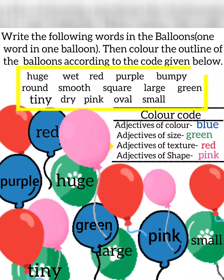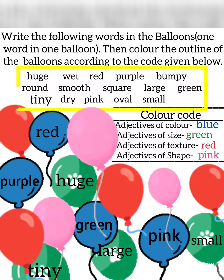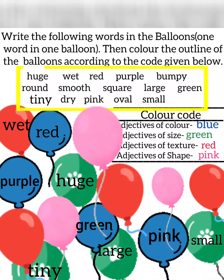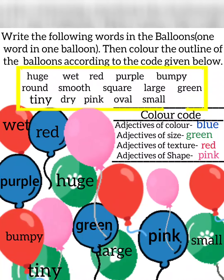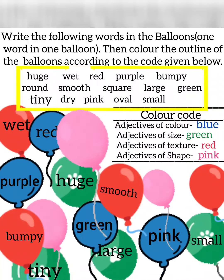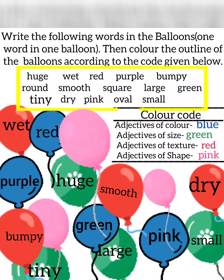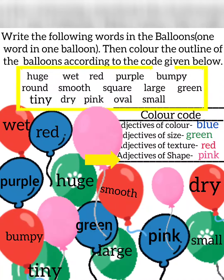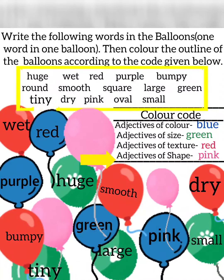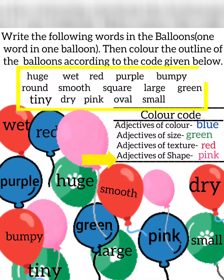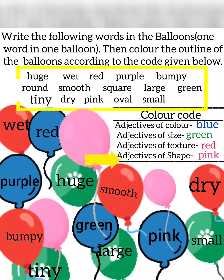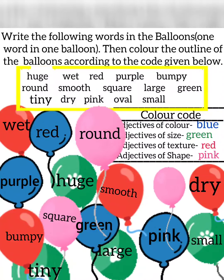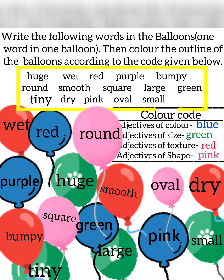Now adjectives of texture: Wet, Bumpy, Smooth, Dry. And our last category is adjectives of shape — fill in the pink balloons: Round, Square, Oval.